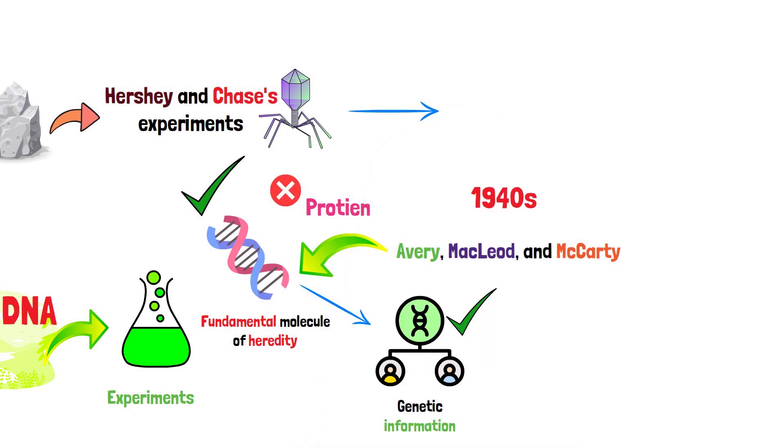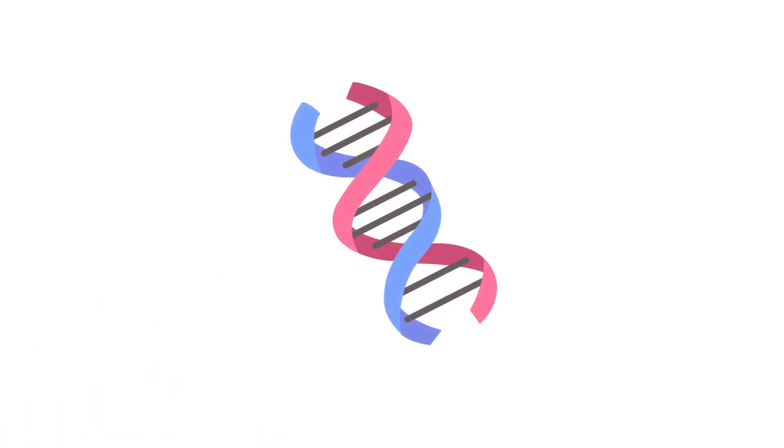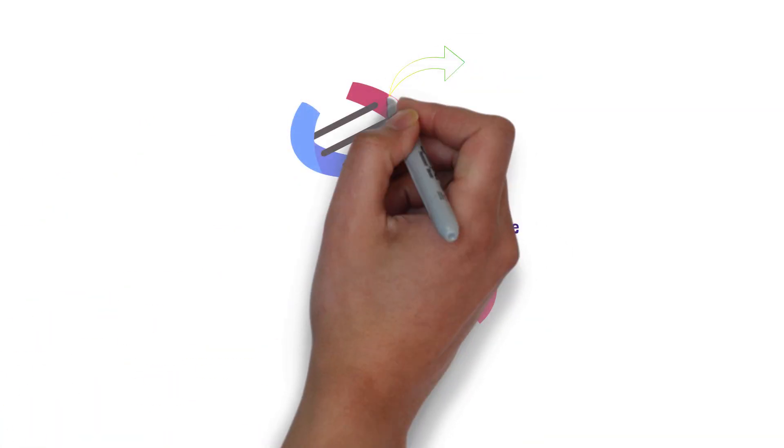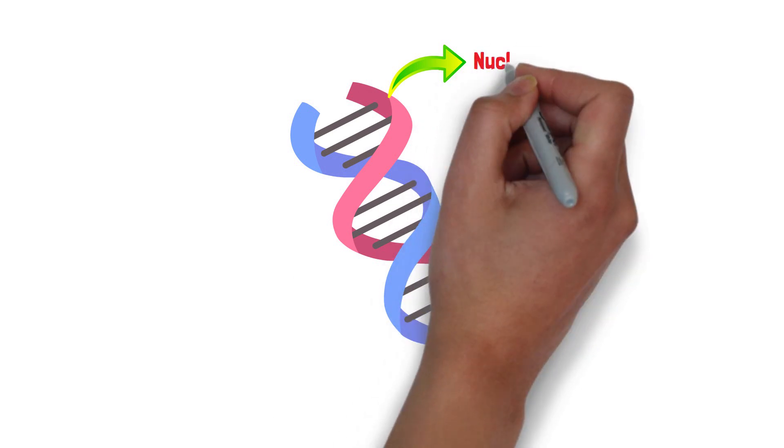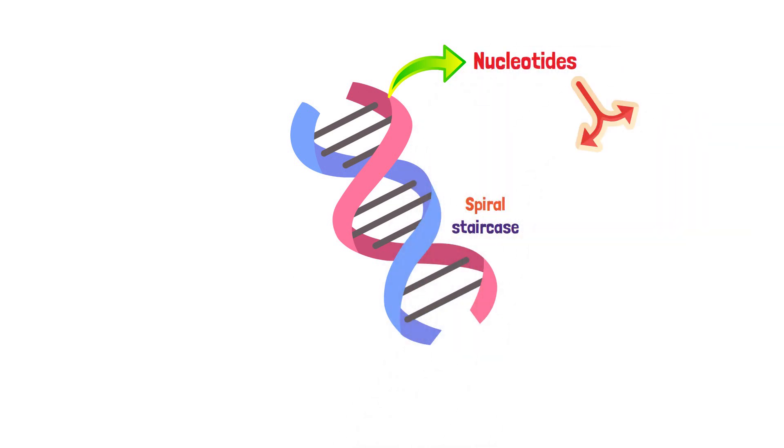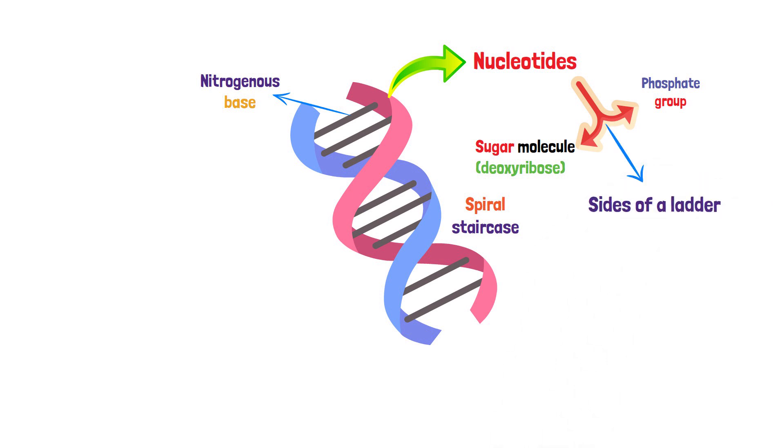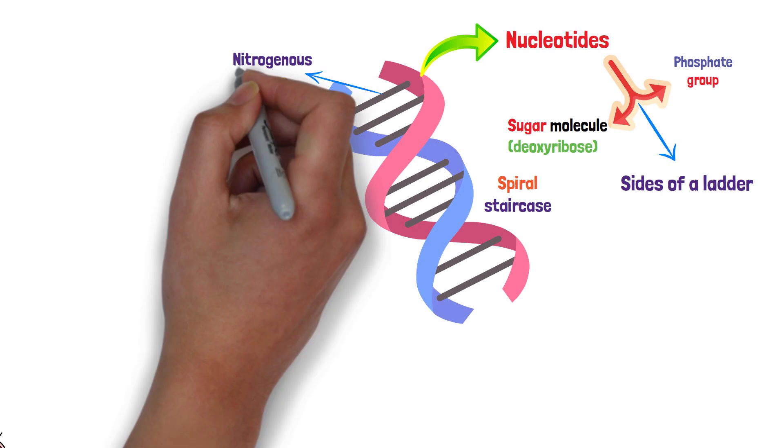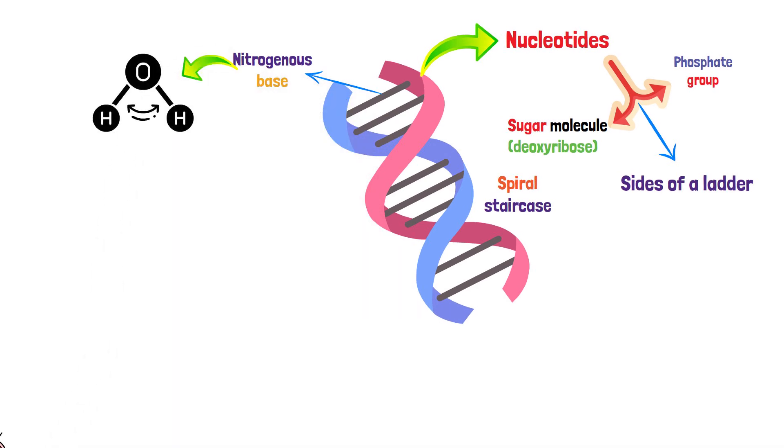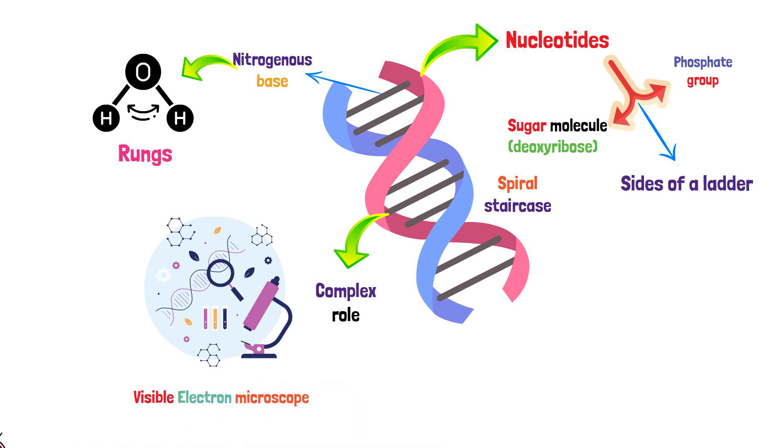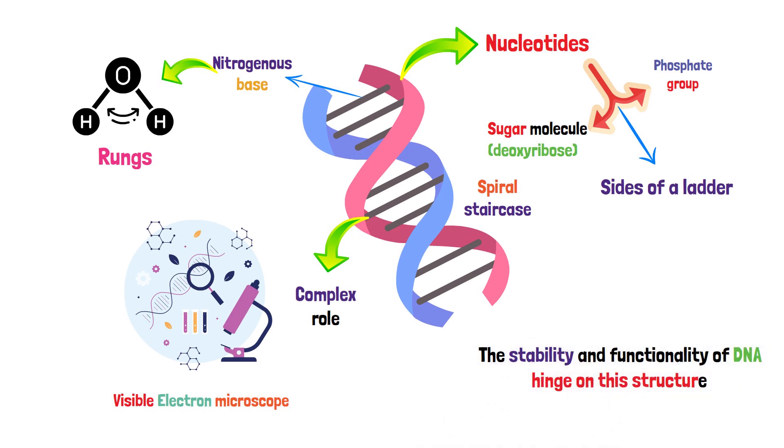This marked the beginning of a new era in understanding life at its most fundamental level. DNA's structure, often likened to a magnificent spiral staircase, is a double helix formed by two strands of nucleotides. Each nucleotide consists of a sugar molecule, deoxyribose, a phosphate group, and a nitrogenous base. The sugar-phosphate backbones act like the sides of a ladder, while pairs of nitrogenous bases, connected by hydrogen bonds, form the rungs. It's interesting to note that despite its complex role, DNA is so small that it is visible only with an electron microscope.